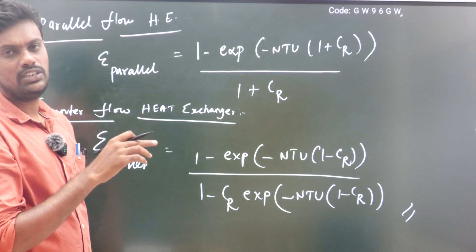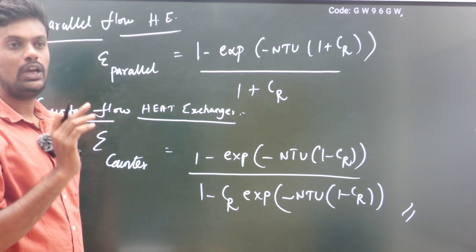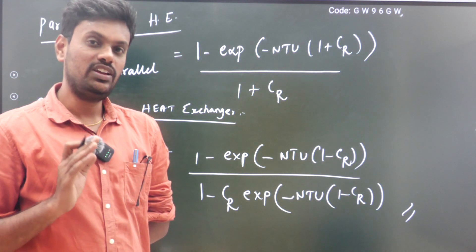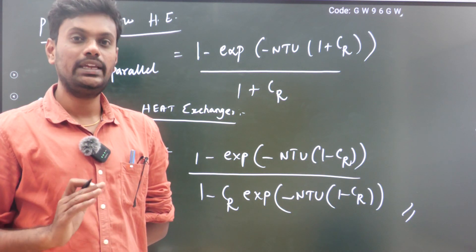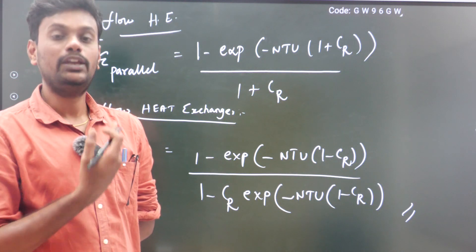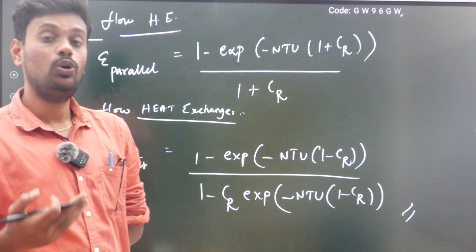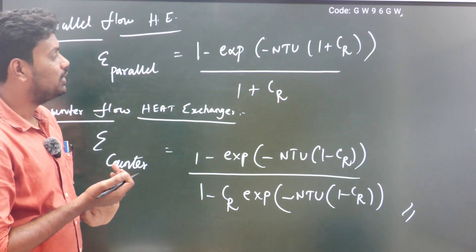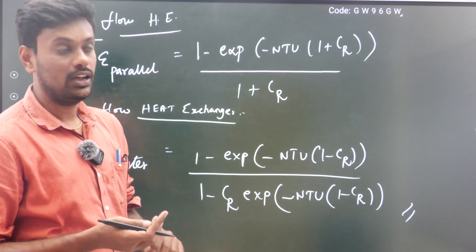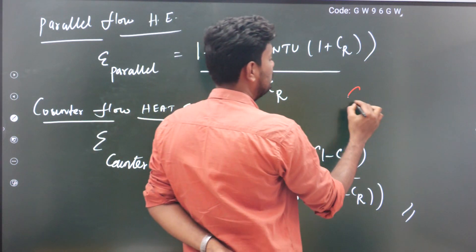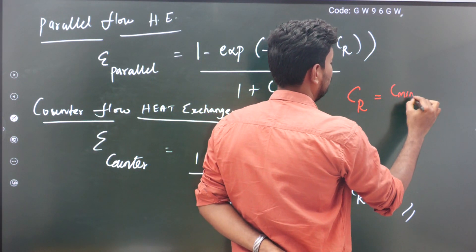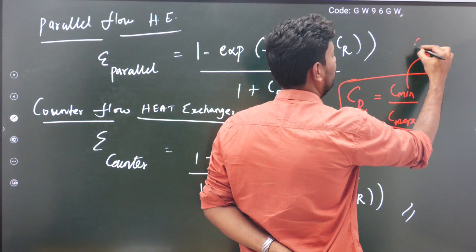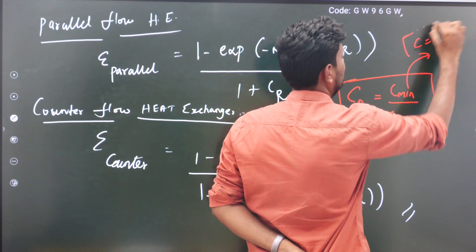If you are solving a problem using the NTU method to find the effectiveness of a heat exchanger, you must identify whether the given problem is parallel flow or counter flow. For parallel flow, the effectiveness formula is: 1 minus exponential of (minus NTU into 1 plus Cr), where Cr is the capacitance ratio, which is C minimum divided by C maximum.